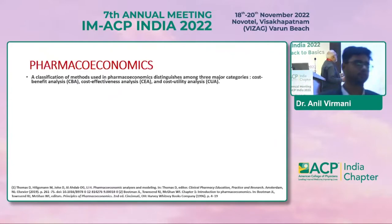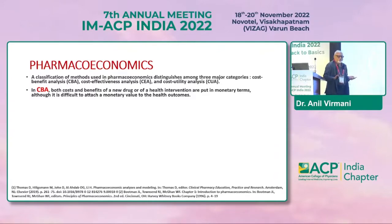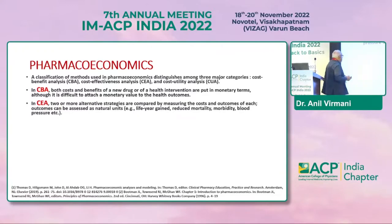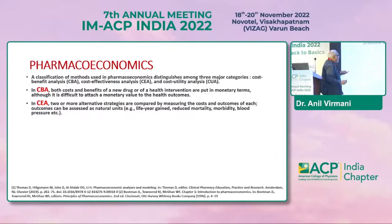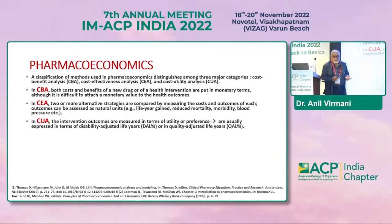When we talk about pharmacoeconomics: cost-benefit analysis is where both the cost and benefits of a new drug or health intervention are converted into monetary terms, although it is very difficult to attach monetary value to healthcare. Cost-effectiveness analysis is where two or more alternative strategies are compared by measuring cost and outcomes, assessed as natural units like life-year gain, reduced mortality, morbidity, blood pressure, etc. Cost-utility analysis measures intervention outcomes in terms of utility or preferences like disability-adjusted life years or quality-adjusted life years.